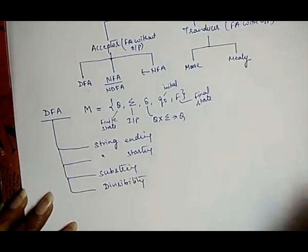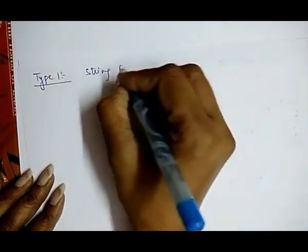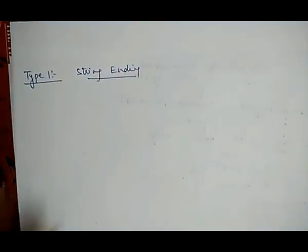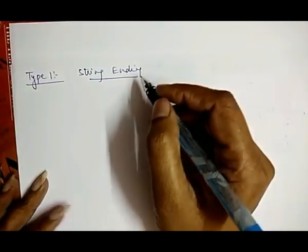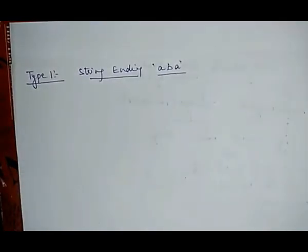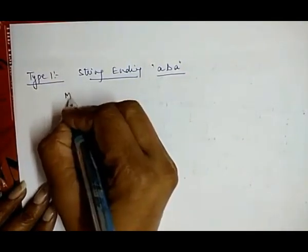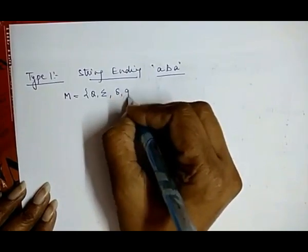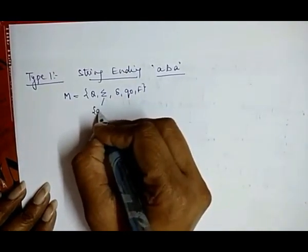We will discuss each type one by one with an example. First, we discuss type one: string ending with. We take an example — construct a DFA for all strings ending with ABA. Using the simplest technique, we first represent this DFA with the five-tuple values: M = (Q, Σ, δ, Q₀, F), where Σ has input {A, B}.